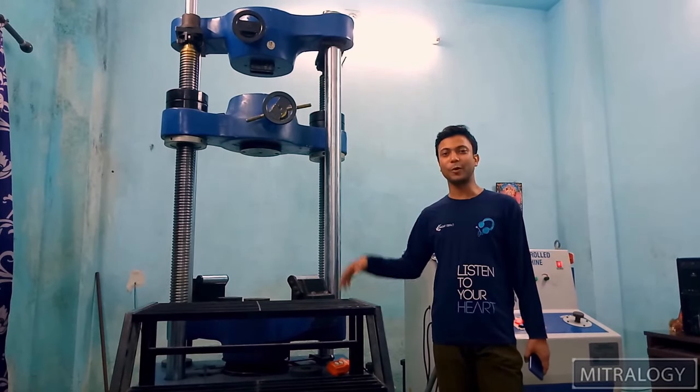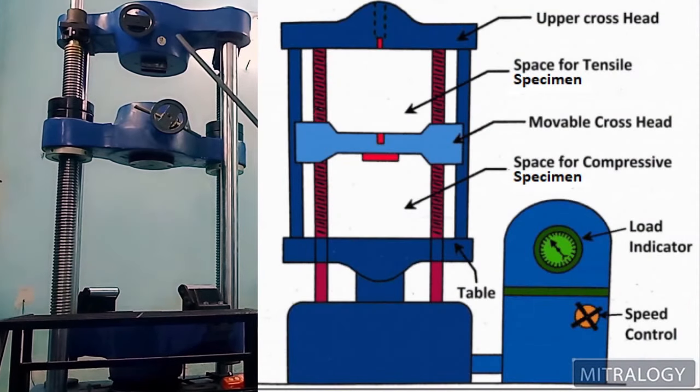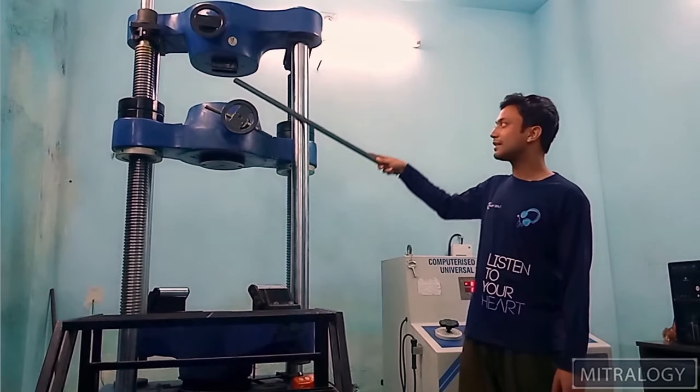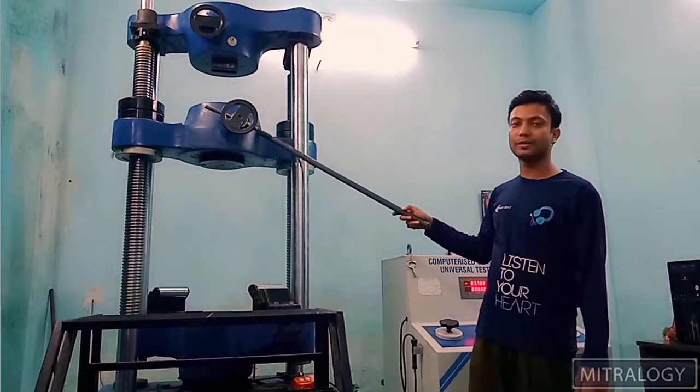Now I am showing you the components. This is upper block side and you can see there are two jaws fitted in there. And the space in between for tensile sample and this is maneuverable crosshead.